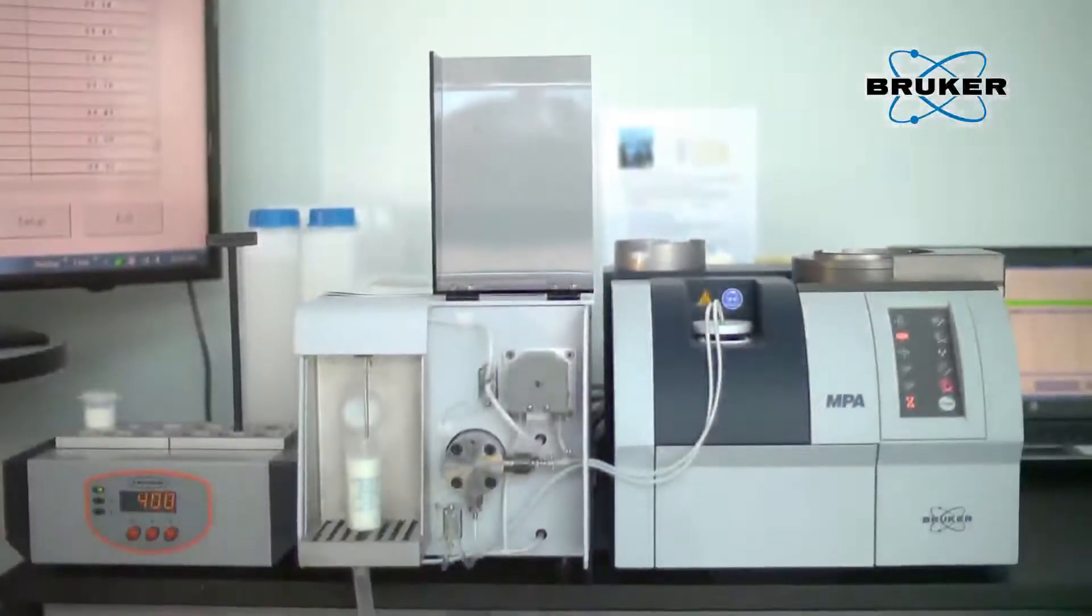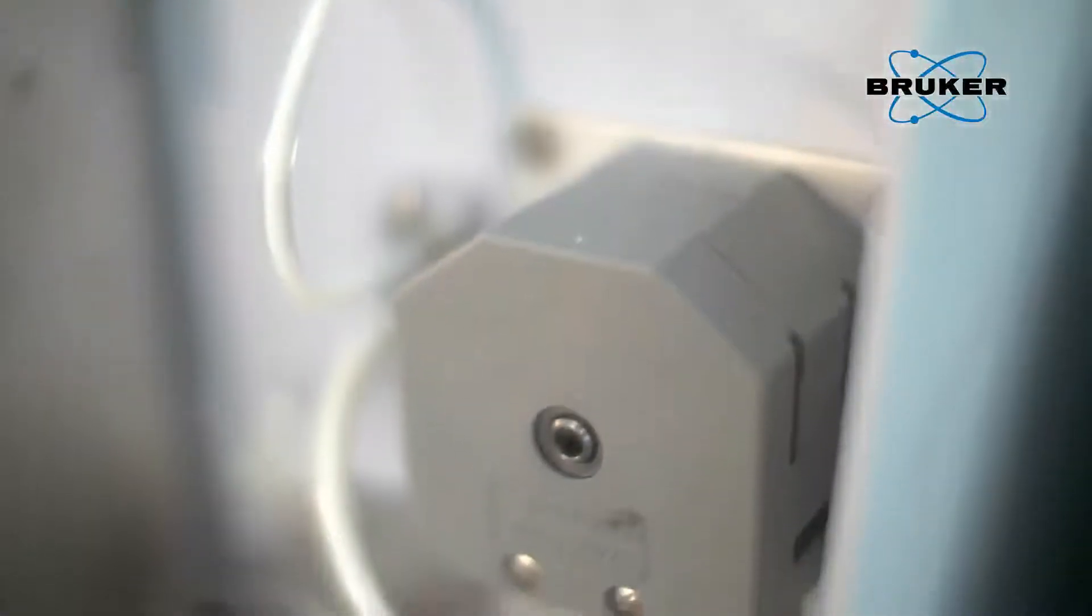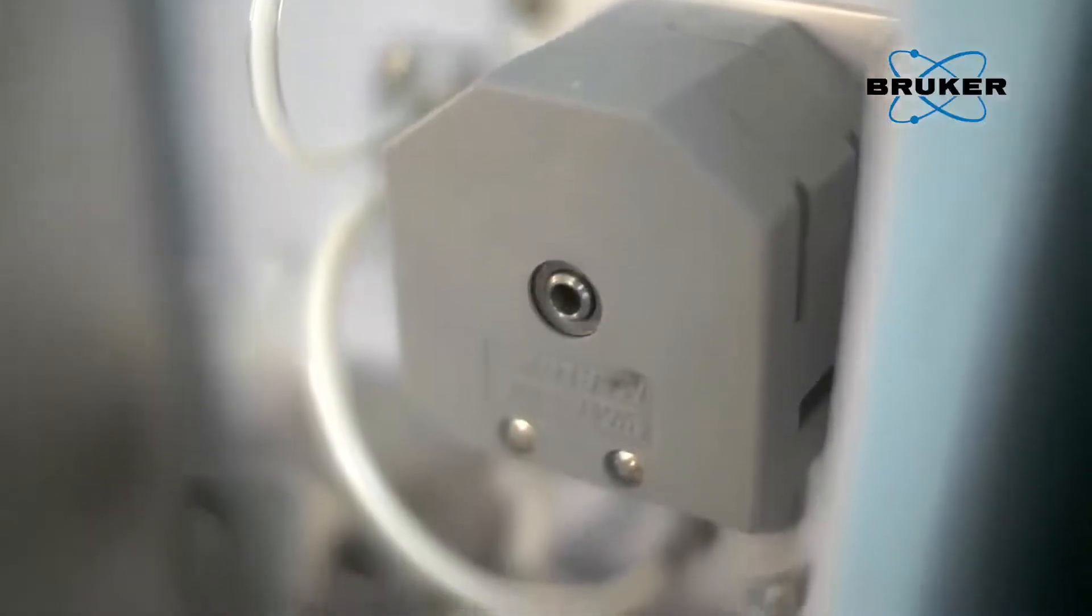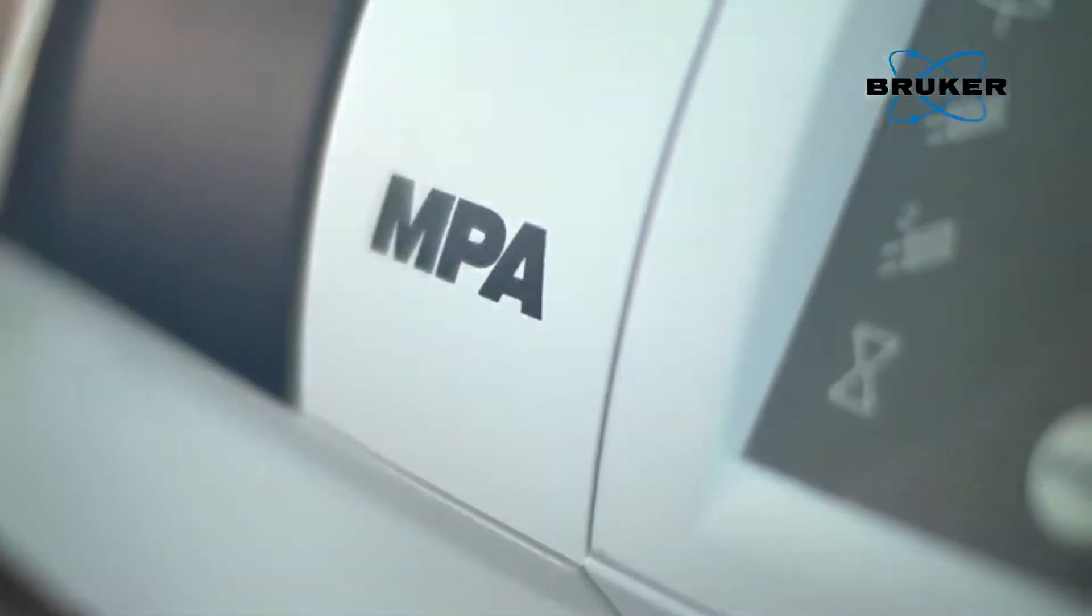The MPA Dairy System from Bruker routinely measures fat, protein, lactose, and total solids in milk and cream simultaneously, with accuracy and precision as good or better than AOAC-approved reference methods.